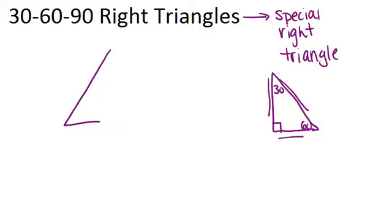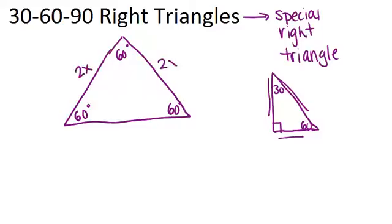So if you have an equilateral triangle, you should remember, equilateral triangles have all sides that are the same length, and all angles are the same. So all angles are 60 degrees. In this case, we're going to let each side be the length 2x. So because it's an equilateral triangle, all the sides are length 2x.